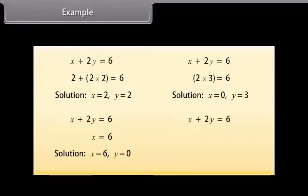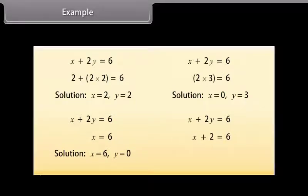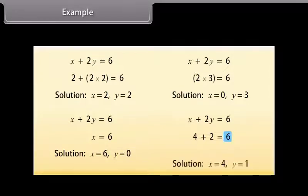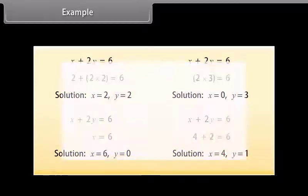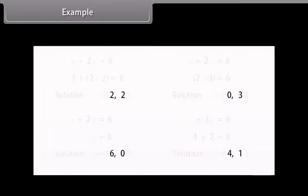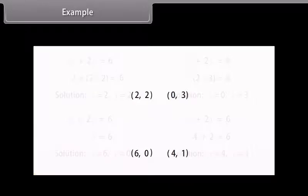And for the fourth solution, let us take Y as 1. The given equation now reduces to X plus 2 is equal to 6, and by substituting X as 4, we get the answer 6. Therefore, (4, 1) is also a solution of the given equation. So, the four solutions we get for the given equation are (2, 2), (0, 3), (6, 0), and (4, 1).